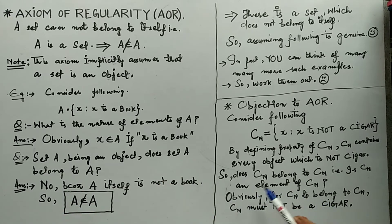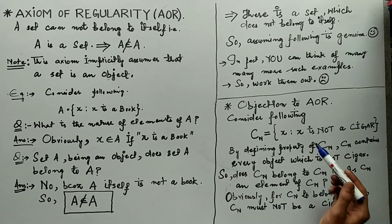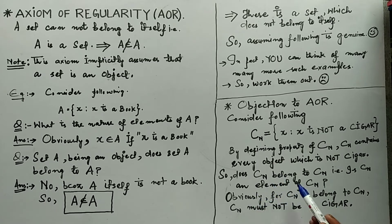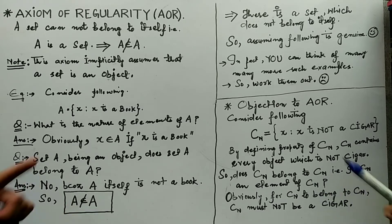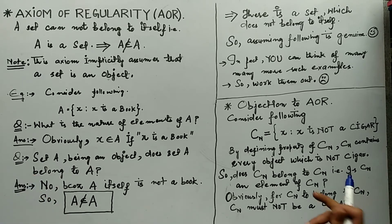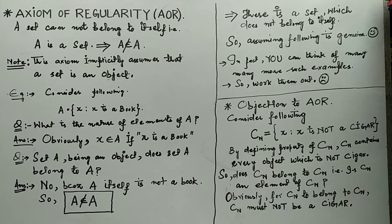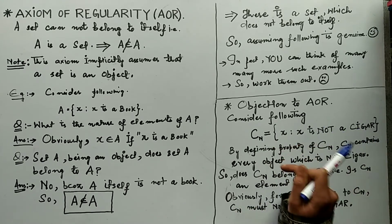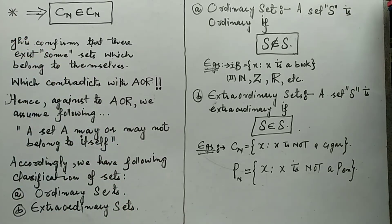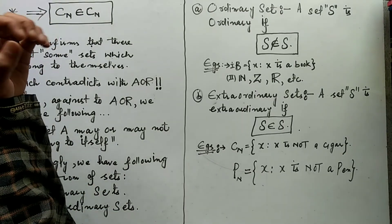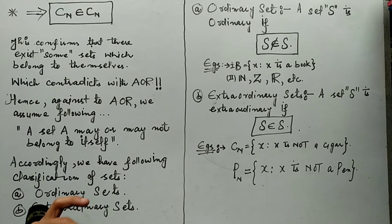An object X belongs to C_N if X is not a cigar. The question is: is C_N itself a cigar? Obviously C_N contains everything except cigars, and C_N itself is not a cigar. Since C_N is not a cigar, it satisfies the defining condition of this very collection — which means C_N is an element of C_N. So here is a clear objection to the axiom of regularity: there are some sets which can belong to themselves, and C_N is one such example. This caused a ripple in the foundations of mathematics.